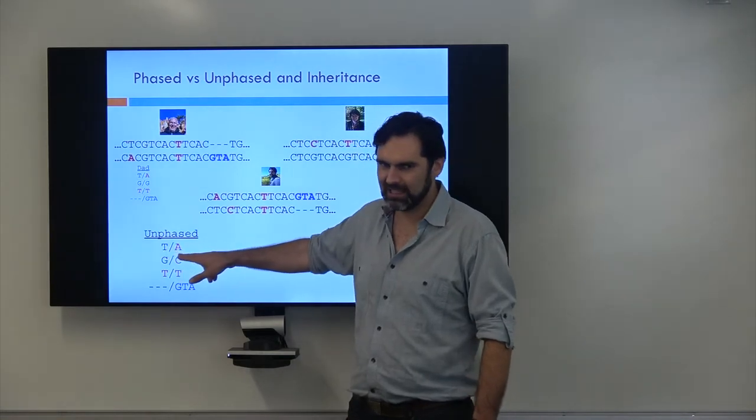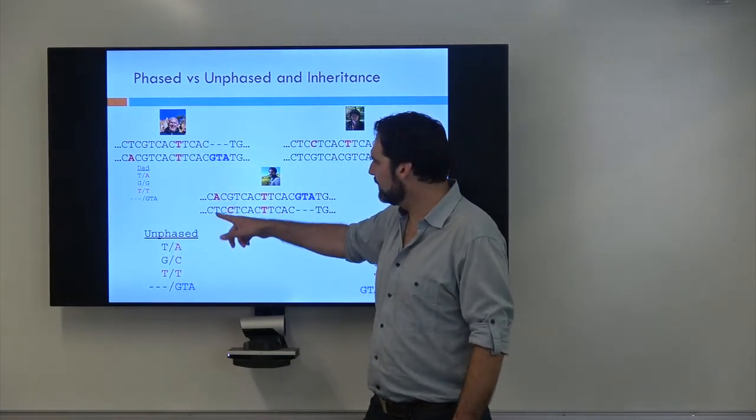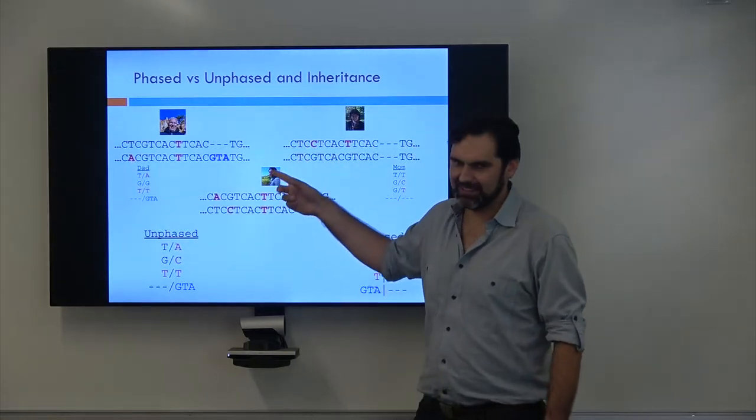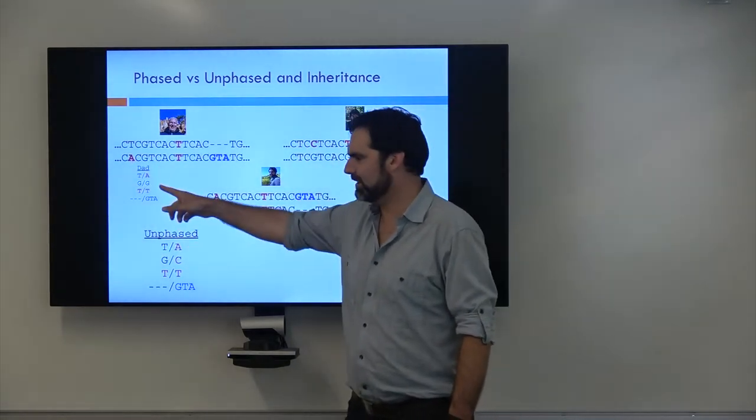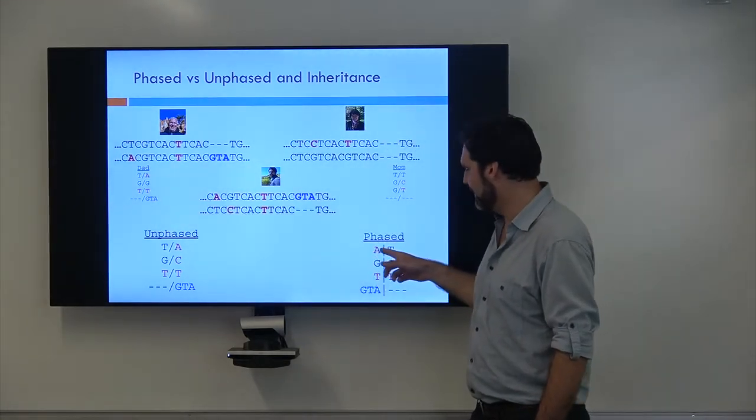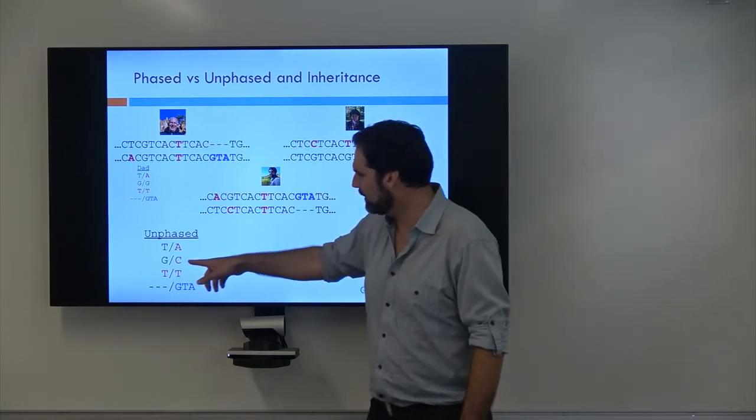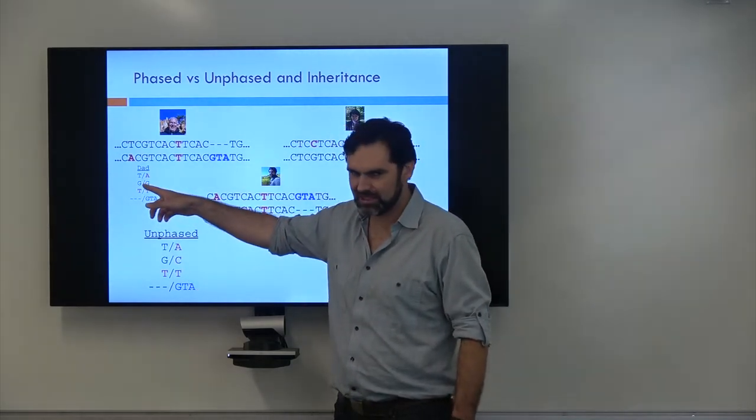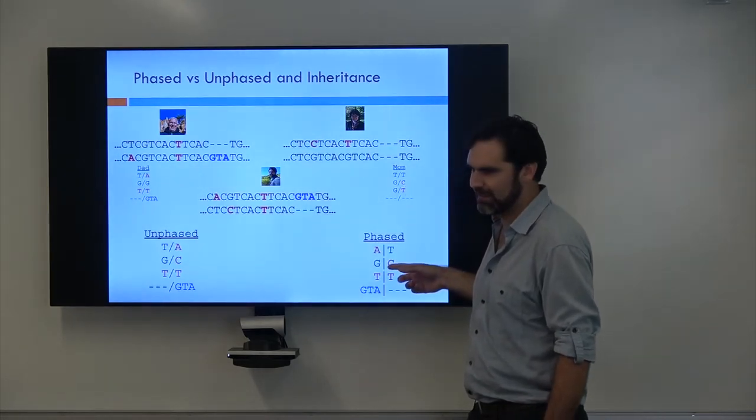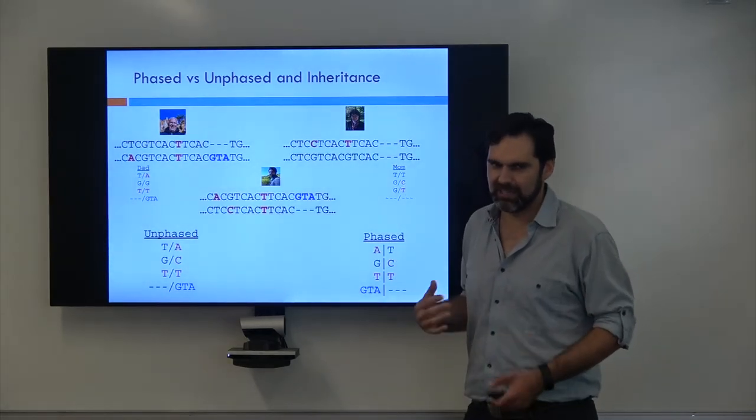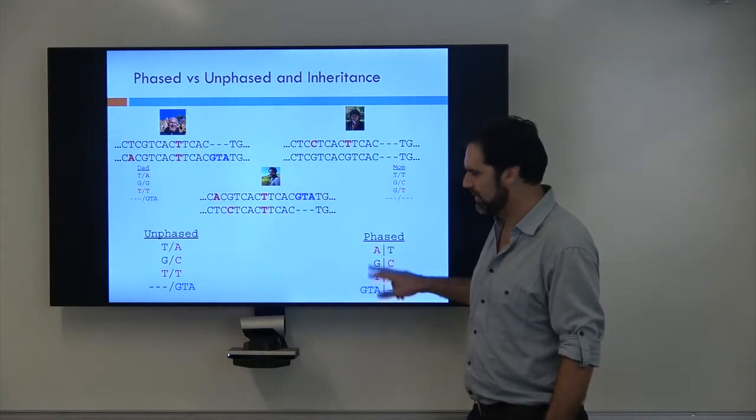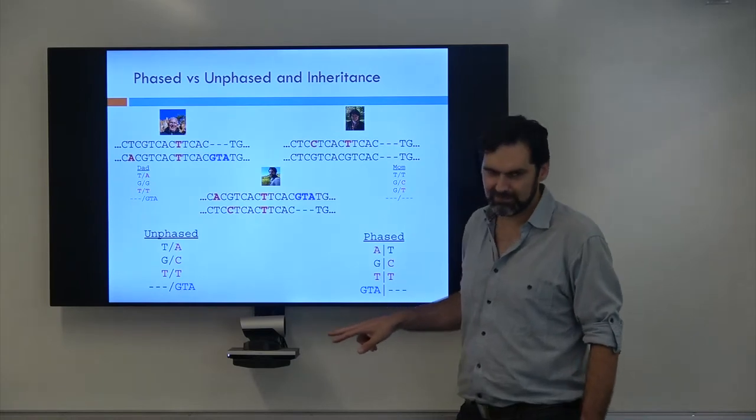So I can look and be like, okay, so I'm a TA. And I go, all right, well, my dad's got a T and an A, but my mom only has T's. So clearly this A had to come from my dad. So I'll put my dad on the left side of this pipe, and there's my mom over there. So then I look, I'm like, okay, GC. My dad's GG. So clearly I got a G from him. And from my mom, I got the C. So then we can put the C over there. And we can just work down until we now know the correct phase for my genome.